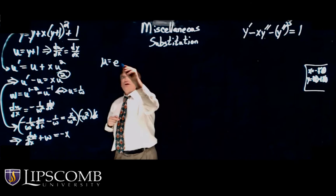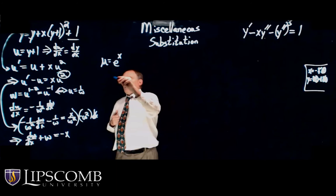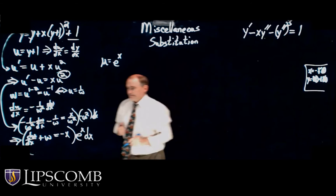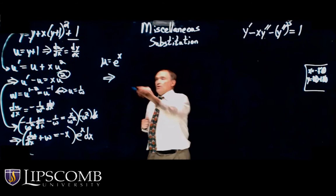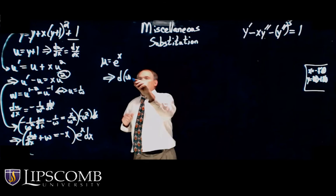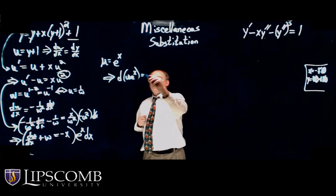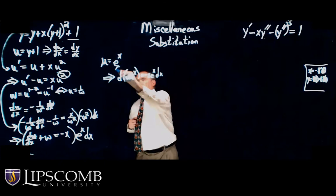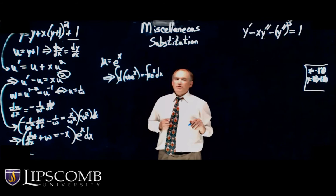Since it's linear, we have an integrating factor: mu equals e to the integral of 1, so that's e to the x. Multiplying everything through by e to the x dx, the left side is the total differential of w times e to the x. On the right side I get negative x times e to the x dx. Integrating both sides, I've got integration by parts.